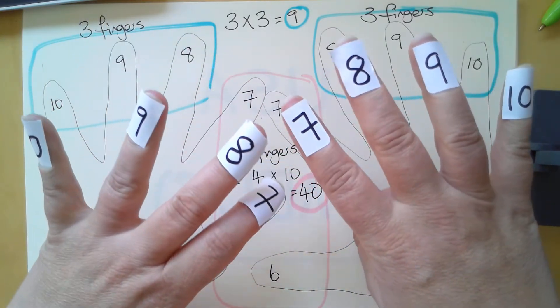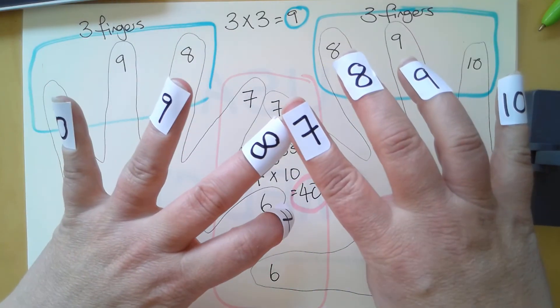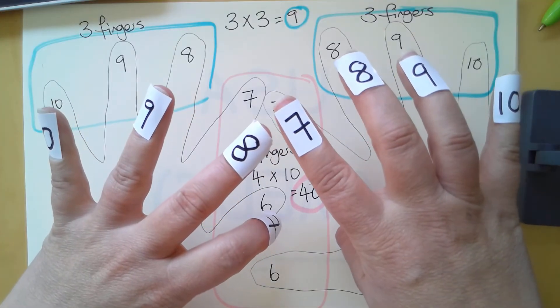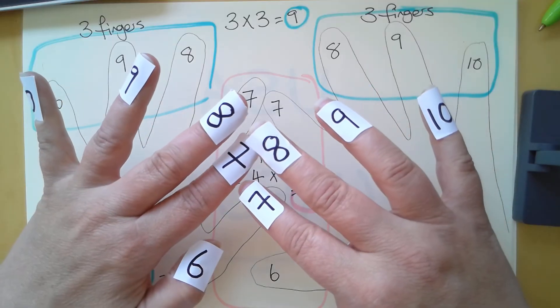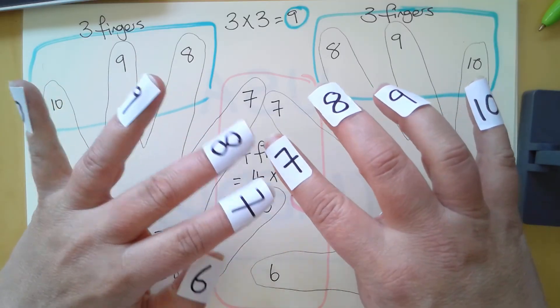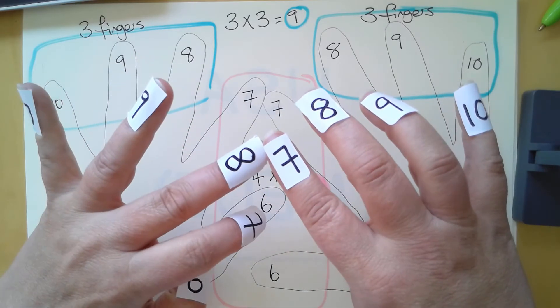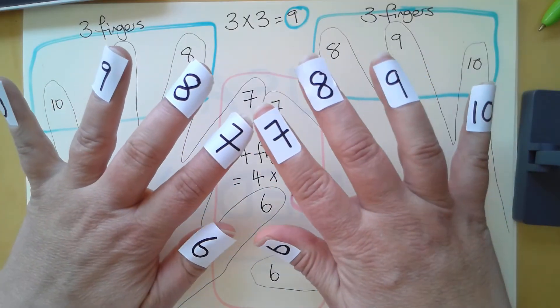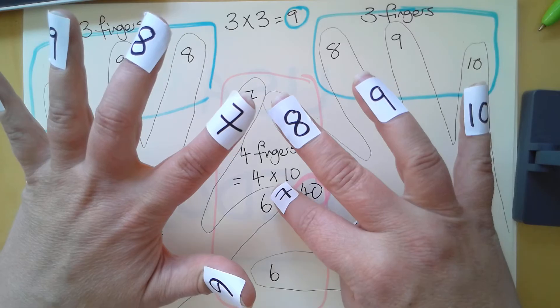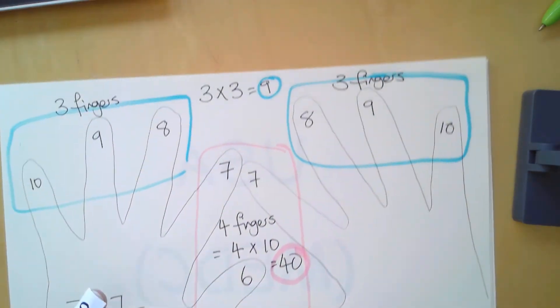It doesn't matter which way round you do this - seven on your right hand or left hand, because multiplication is commutative. We can have seven multiplied by eight or eight multiplied by seven. It doesn't matter which way round you do it; the answer is still the same.